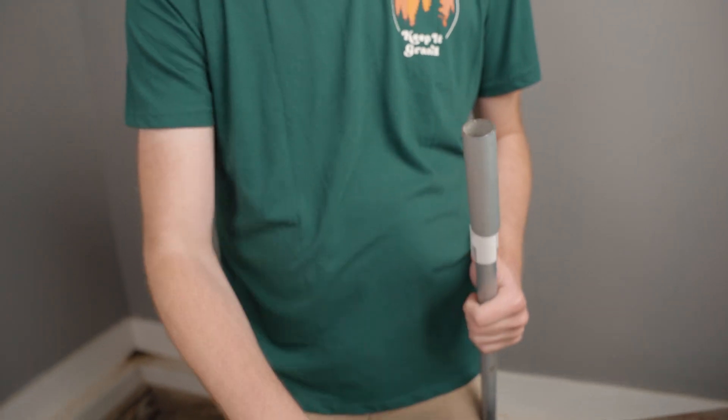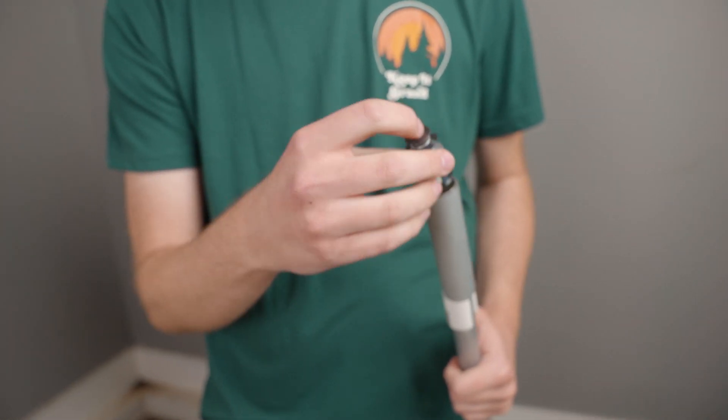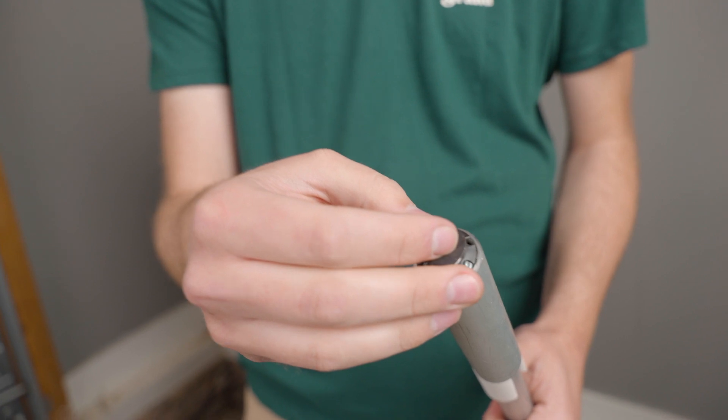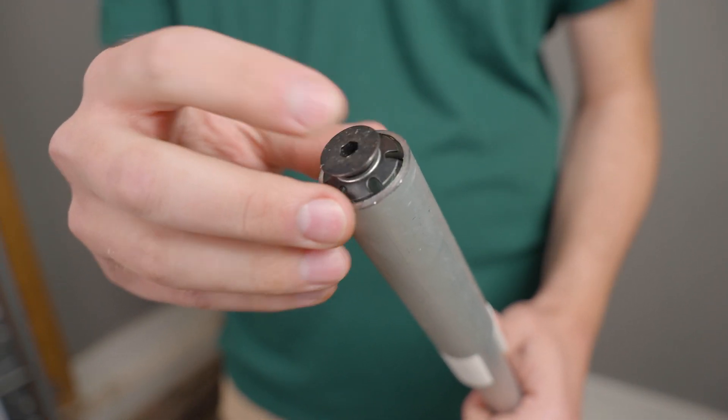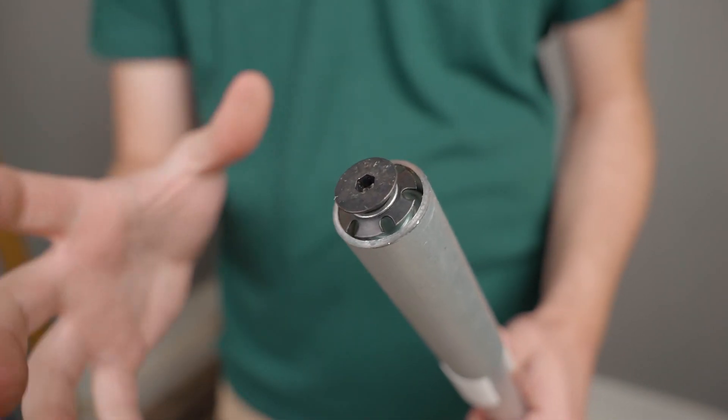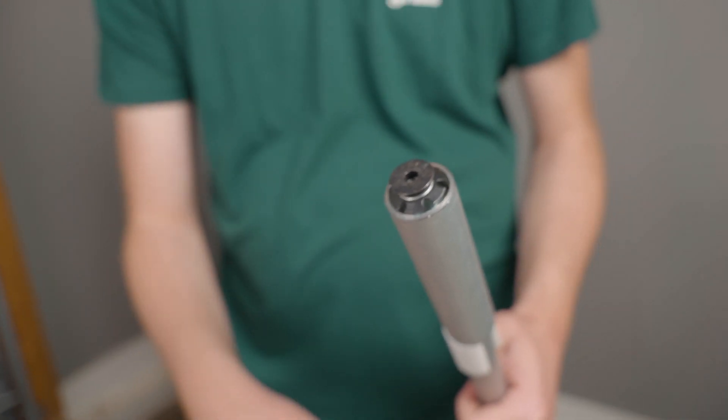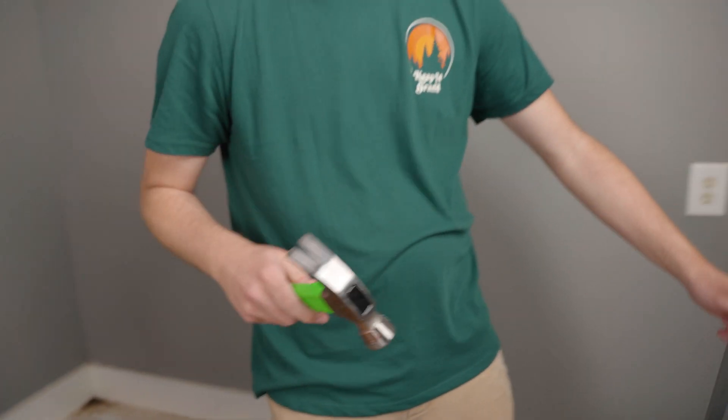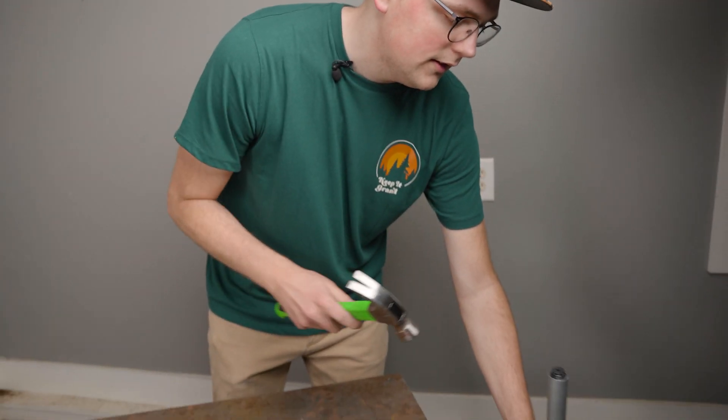Then we're just going to put in this bolt and the inserts inside of the one-inch conduit and now that's creating basically an outer sleeve that's going to guide it in and then we just have to hammer it until the insert is all the way inside the pipe.